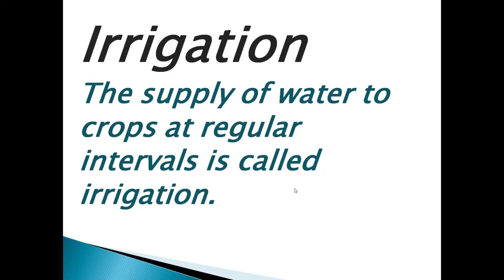Water is essential because germination of seeds does not take place under dry conditions. Nutrients dissolved in water are transported to each part of the plant. Water also protects crops from frost and hot air currents. To maintain the moisture of the soil for healthy crop growth, fields have to be watered regularly. The supply of water to crops at regular intervals is called irrigation.